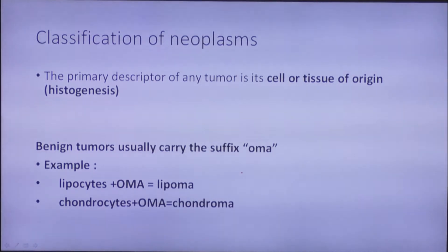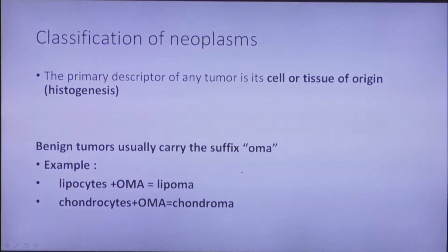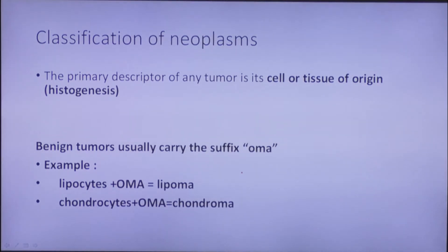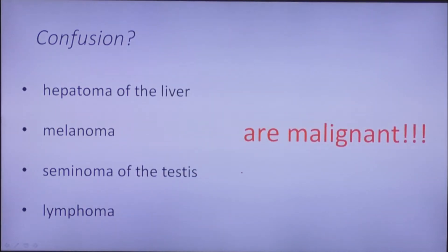The classification of benign tumors is the basis for the names of their malignant variants. The suffix '-oma' for benign tumors is preceded by reference to the cell or tissue of origin. For example, if a tumor resembles chondrocytes, we call it chondroma; if it resembles the precursor of chondrocytes, we call it chondroblastoma. However, not everything is so simple — tumors such as hepatoma, melanoma, seminoma of the testes, and lymphoma can sound benign but are highly malignant.